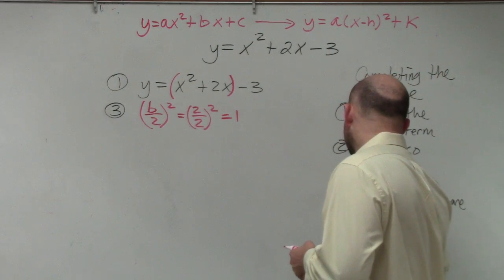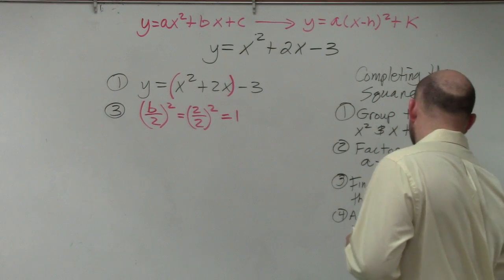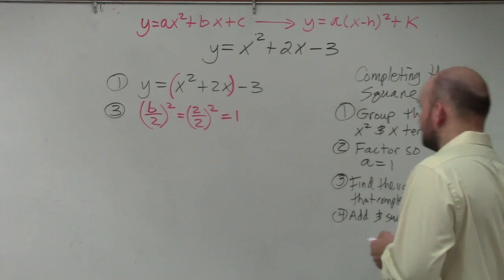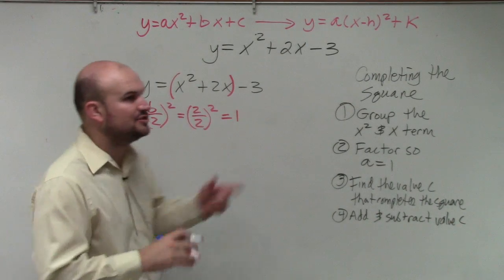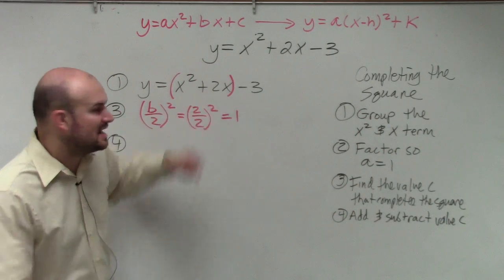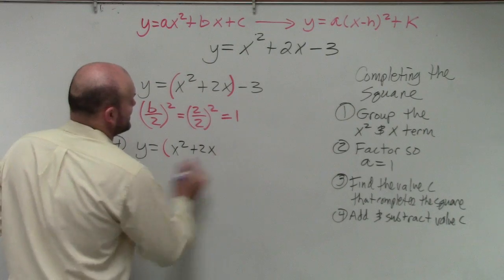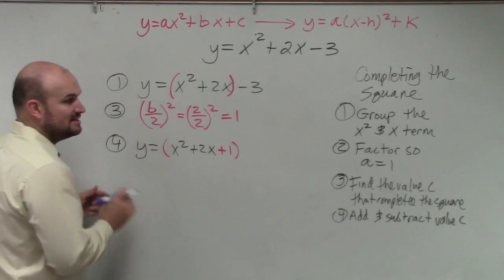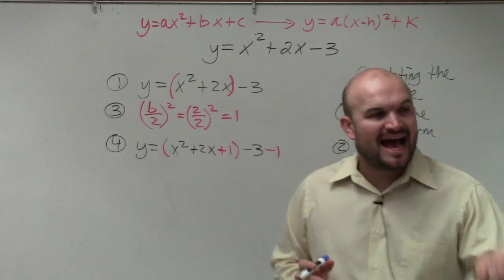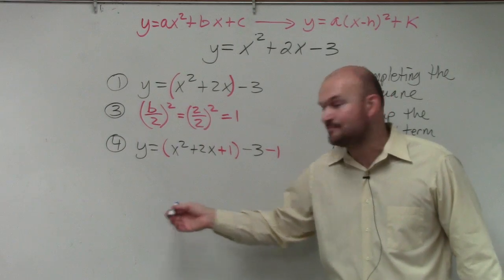Step number four: you're going to add and subtract your value c. What I mean by that is — like we rewrote the perfect square trinomial — you're going to take your 1 and add it inside those parentheses. So I'm going to have y equals (x² + 2x + 1), and then subtract it outside the parentheses. You have to make sure you add and subtract it.